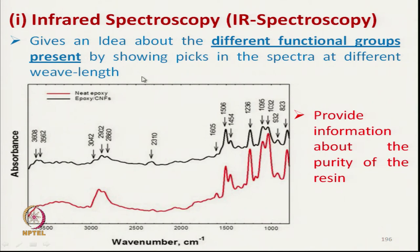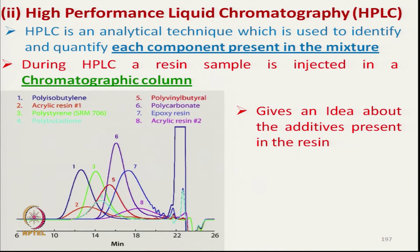IR spectroscopy gives an idea about the different functional groups present in the polymer. Different functional groups show different peaks in the spectra at different wavelengths, allowing us to determine the purity of the polymer. If the polymer is not pure it will affect the characteristics of the final composite. By HPLC we can identify and quantify each component present in the mixture, and it gives an idea about the additives present in the resin.